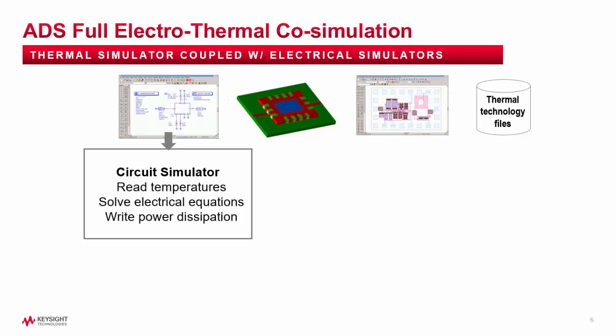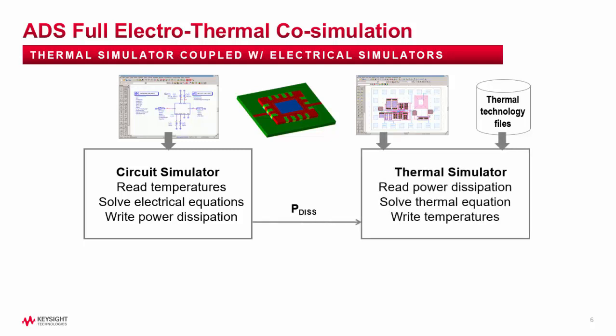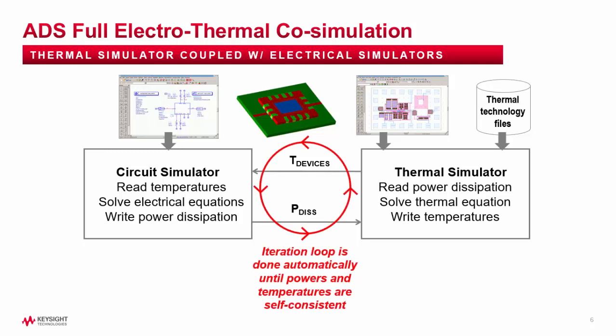The initial circuit simulation uses some initial temperatures for all the devices, then solves all the necessary electrical equations and calculates power dissipations for all devices. These devices can be active, like transistors or diodes; passive, like resistors or inductors; or interconnects like transmission lines and vias. All calculated power dissipations are then passed into the layout, and the thermal solver uses them to solve the layout in full 3D. Then temperatures are passed back to the schematic device models, and a new circuit simulation is performed with these updated temperatures. This process repeats until there are self-consistent temperatures and power dissipations within some user-settable delta-T and delta-P values.